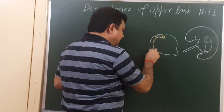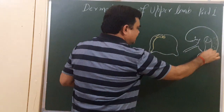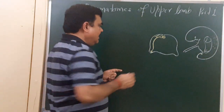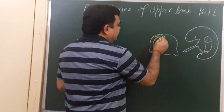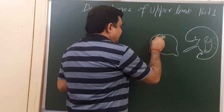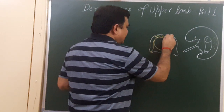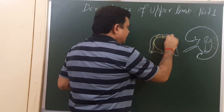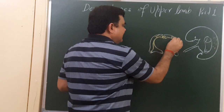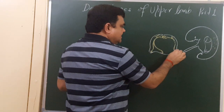The ventral ramus gives a lateral branch here, which gives supply to the lateral side and lateral wall of the trunk. Here it gives supply to the ventral branch. On the other side, this is the spinal nerve, this is the dorsal ramus, this is the ventral ramus, which gives a branch to the limb.